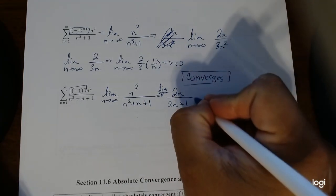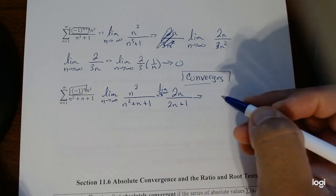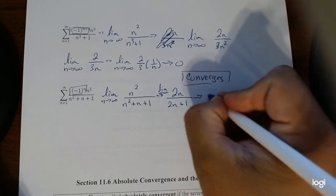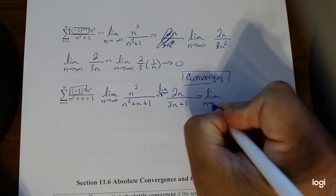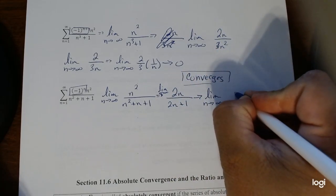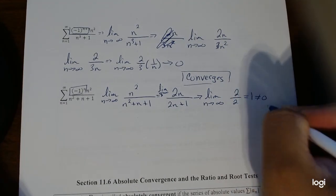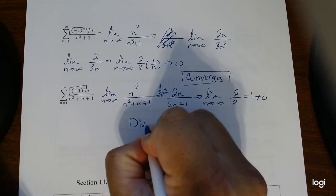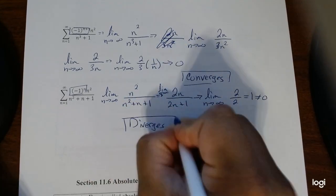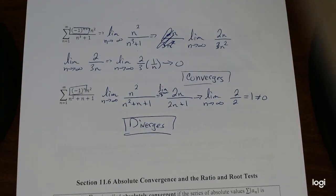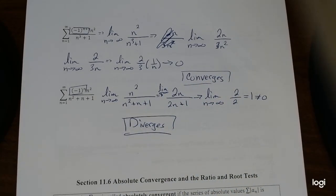So taking L'Hopital's again gives us 2 over 2, which is 1, which doesn't equal 0. So this diverges. So alternating series test is a nice test because notice there's not a lot of work. You literally just take the limit of the function itself or the, well, not the function, but the sequence. And most times you can do L'Hopital's because it's usually going to be infinity over infinity. And so we break it down just to know if it's 0 or not.